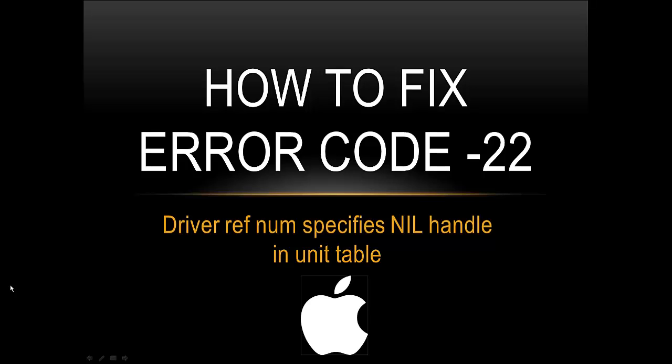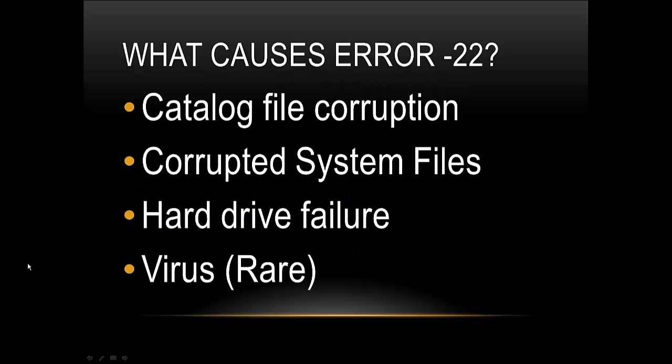So what is error code 22 and what causes it? Catalog file corruption can cause it — maybe you accidentally deleted something that you shouldn't have. Corrupted system files can cause it too. System files become corrupted if maybe the data in one of the files gets scrambled somehow and the system can no longer read it, or maybe you accidentally deleted a file that is necessary for your system or your computer to run properly. That can do it too.